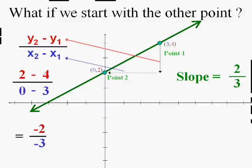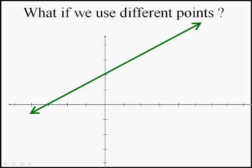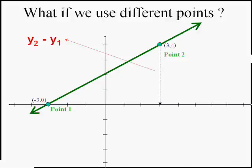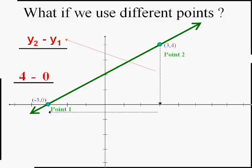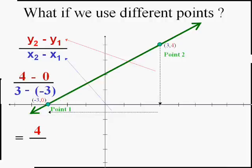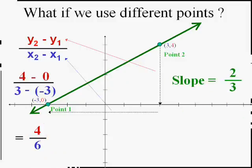So it doesn't matter which point is point one and which point is point two. Even if we use completely different points on this line — let's use (−3, 0) and (3, 4) — you've got to be careful with your negatives. Our rise will be y2 minus y1, which is four minus zero, over our run, which will be x2 minus x1: three minus negative three. Remember, when we subtract a negative, the two negatives become a positive, so we get four over six. We always have to reduce — and son of a gun, we still get two-thirds.